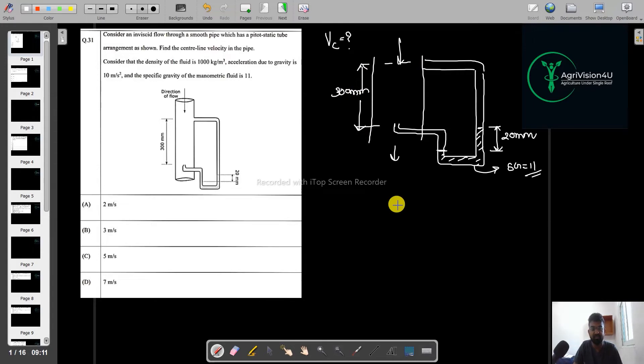As we know the direct formula for the pitot tube is V equals to under root 2G into delta H. This is the direct formula and it has come by applying the Bernoulli equation at point 1 and 2. After that here our main task is the delta H and we know the formula.